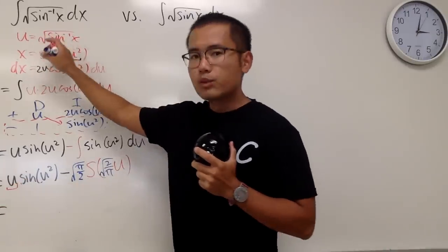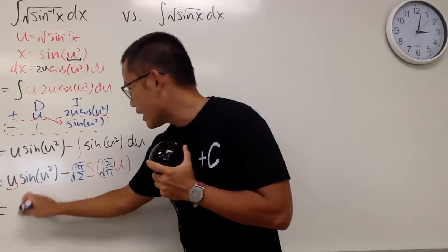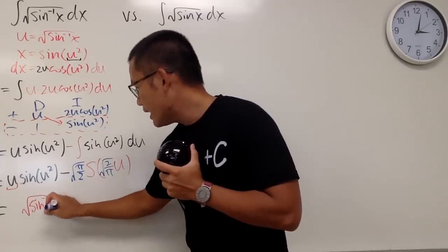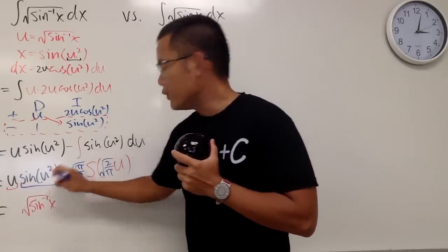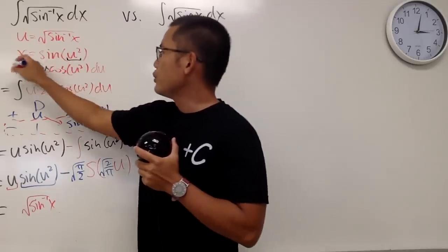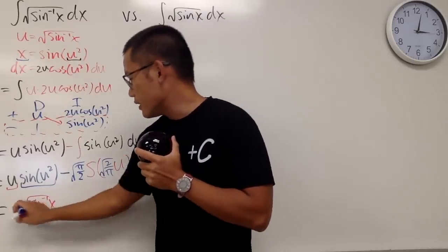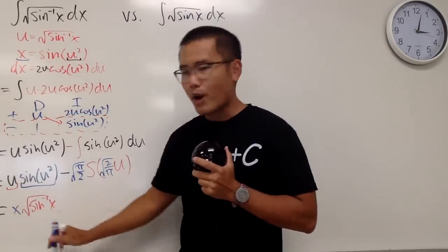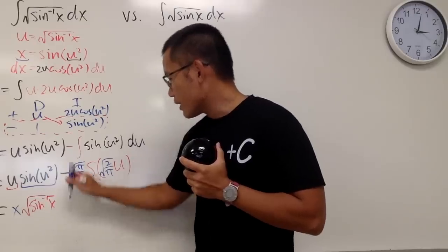Well, u, which is just the square root of inverse sine x, so let's put that down right here, and we have the sine of u squared, and notice, that's just nicely equal to x. So let me just put that in the front. So that's the first part right here, and, of course, we can continue.